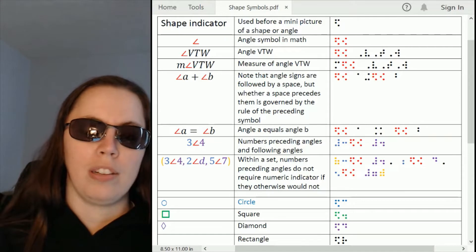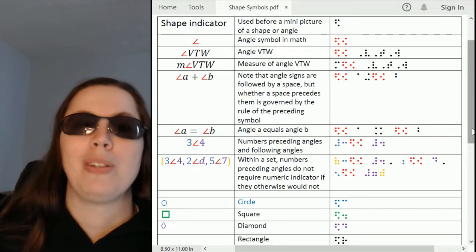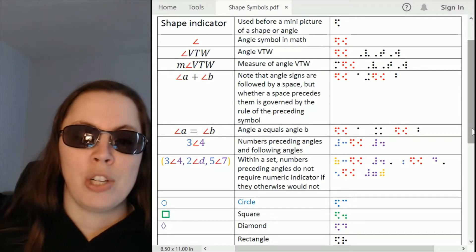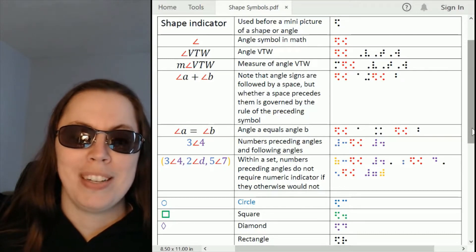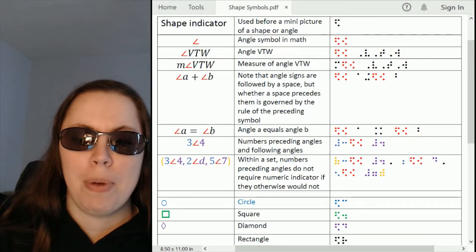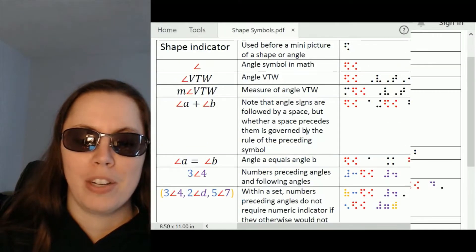So it's important for all TDIs to know how to build those symbols in the Nemeth code. They're all built on the shape indicator which is dots 1246 and that indicates to the reader that what follows has its shape meaning, that it's going to mean what a shape does.